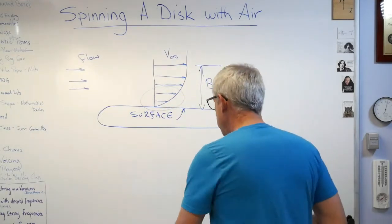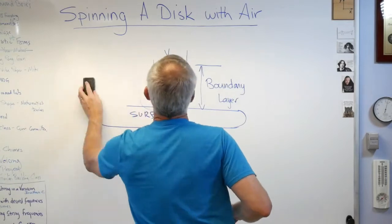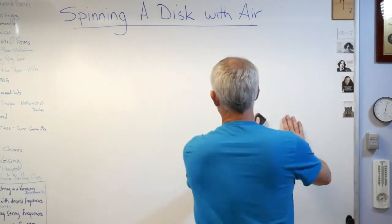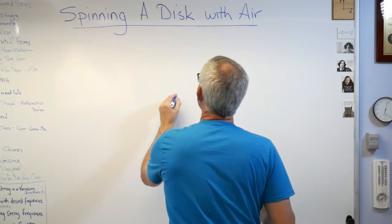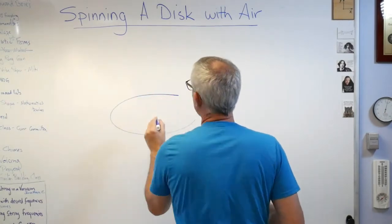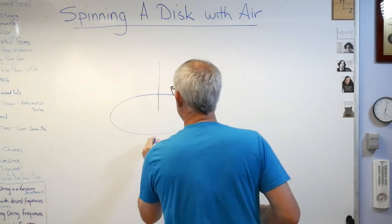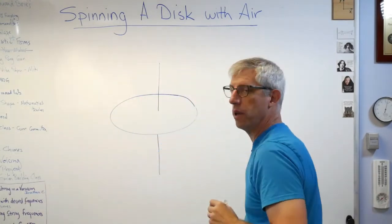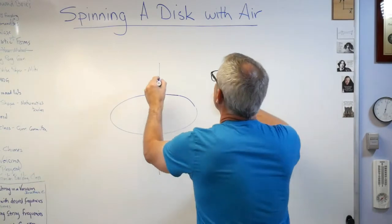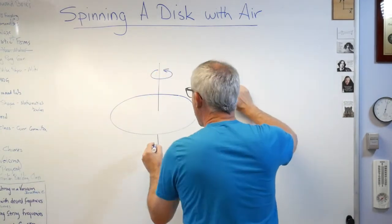So let's go to now a disk. Let's say that you have a disk, and I'll see if I can draw it here. There's a potato-shaped disk and it's got a shaft going through it.